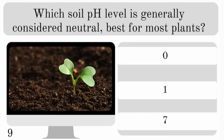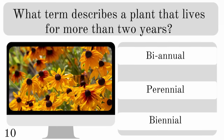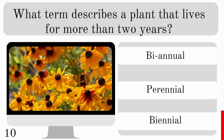Which soil pH level is generally considered neutral and best for most plants — 0, 1 or 7? The answer is 7. So what term describes a plant that lives for more than two years? Is it bi-annual, perennial or bi-annual? It is perennial.